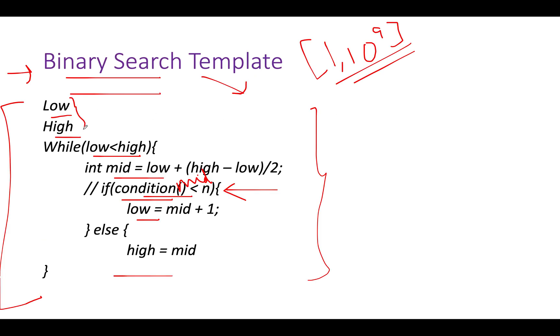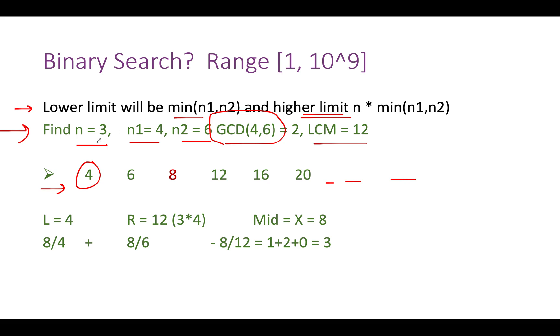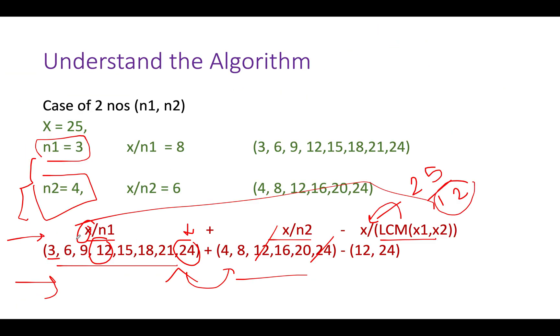What would be the higher limit? It would be n times minimum of n1, n2. The upper limit will not go beyond that. This makes our high value equal to 3 times minimum of 4, 6, which is 4, giving us 12. Therefore, we have low as 4, high as 12. The middle element is 4 plus 12 is 16, 16 by 2 is 8. So x comes out to be 8. We apply the formula x by n1 plus x by n2 minus x by LCM of n1 and n2.